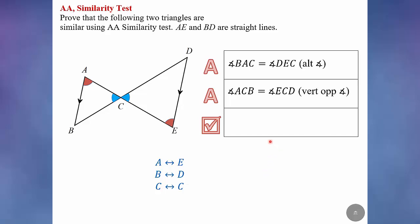For the second A, angle ACB equals angle ECD because of vertically opposite angles. ACB, which is the first, third and second vertices should correspond to ECD, the first, third and second vertices as well.